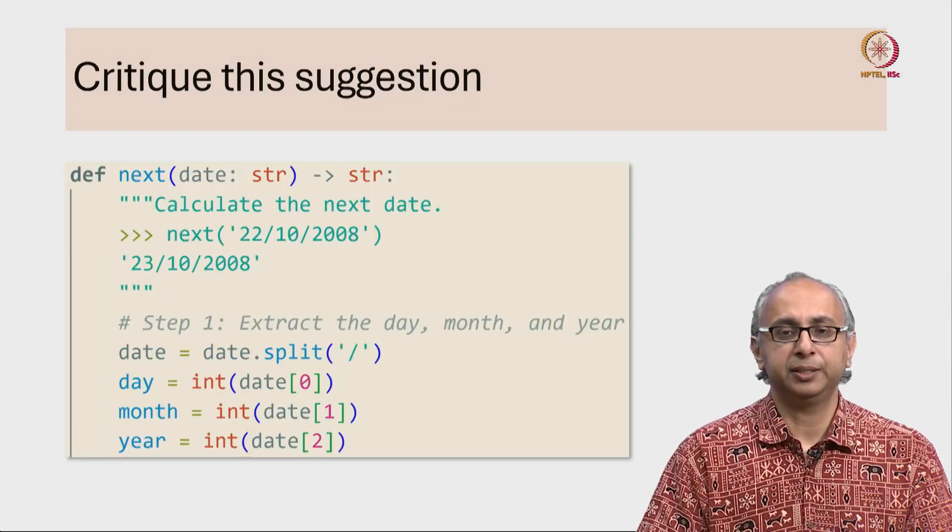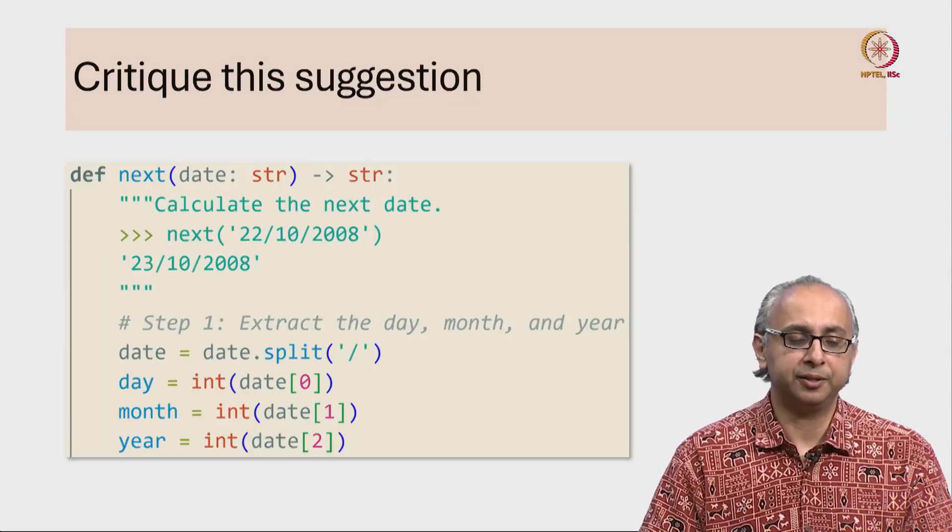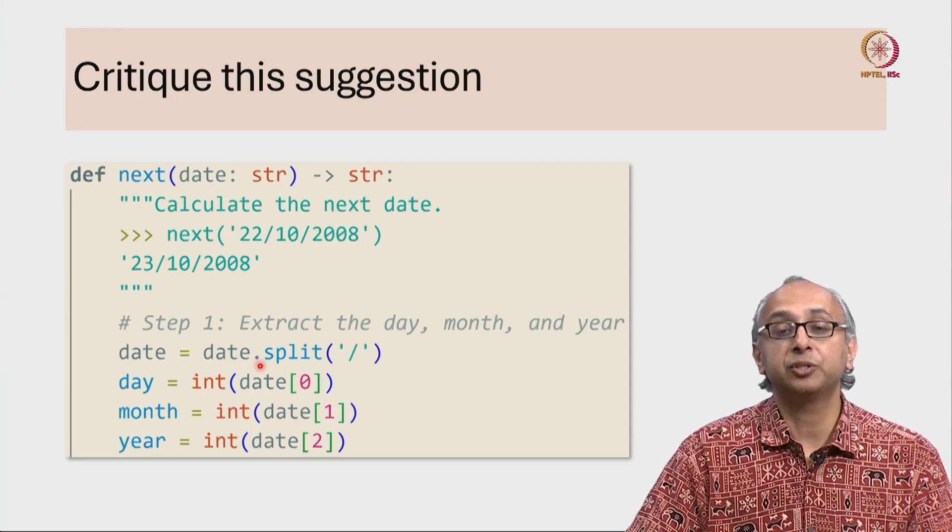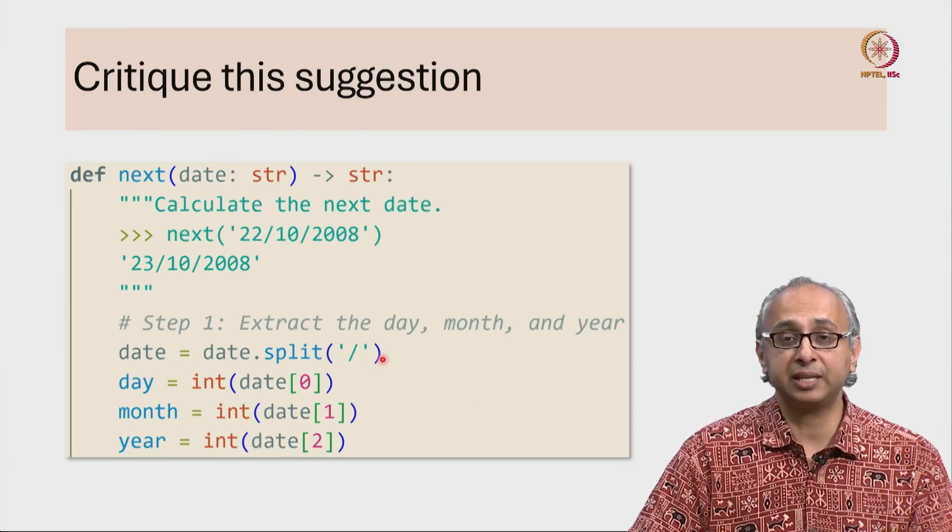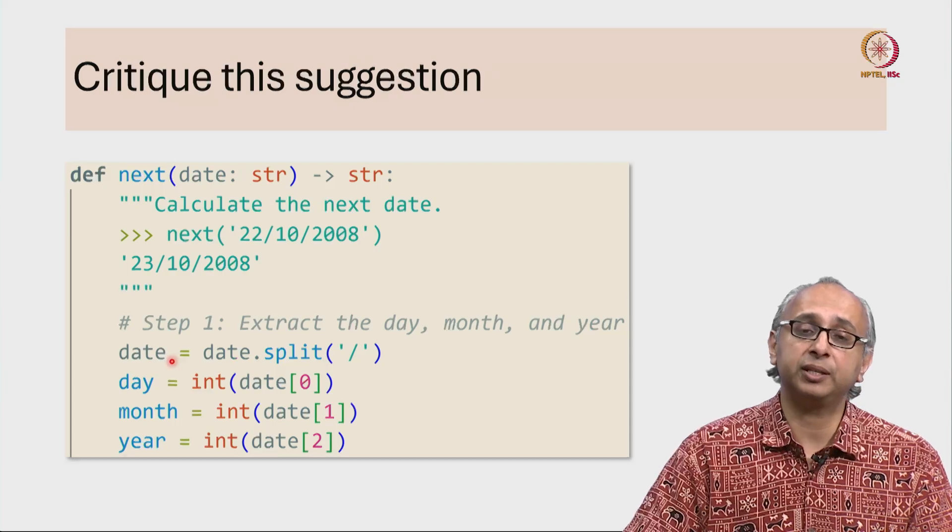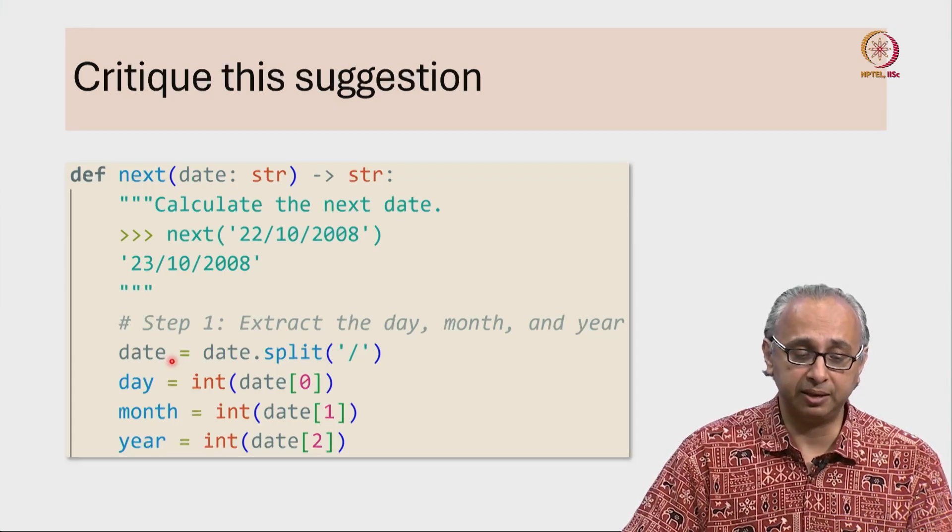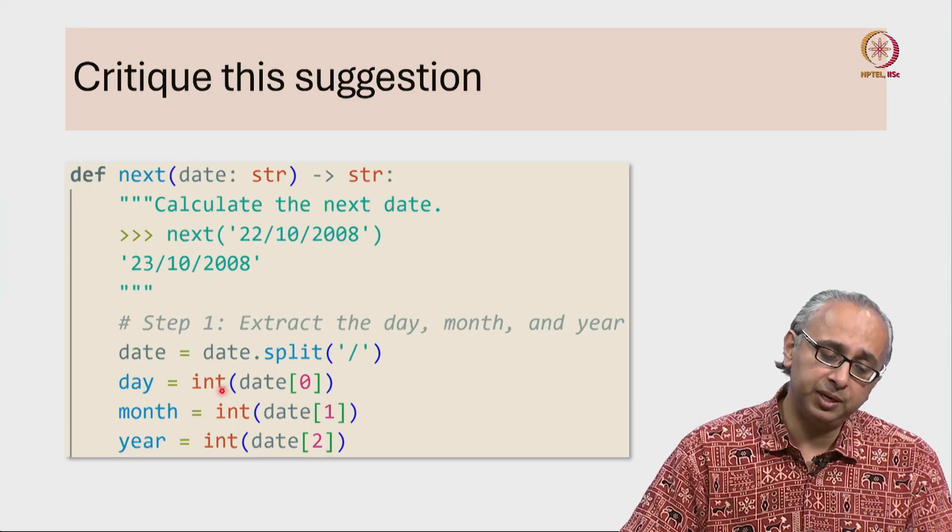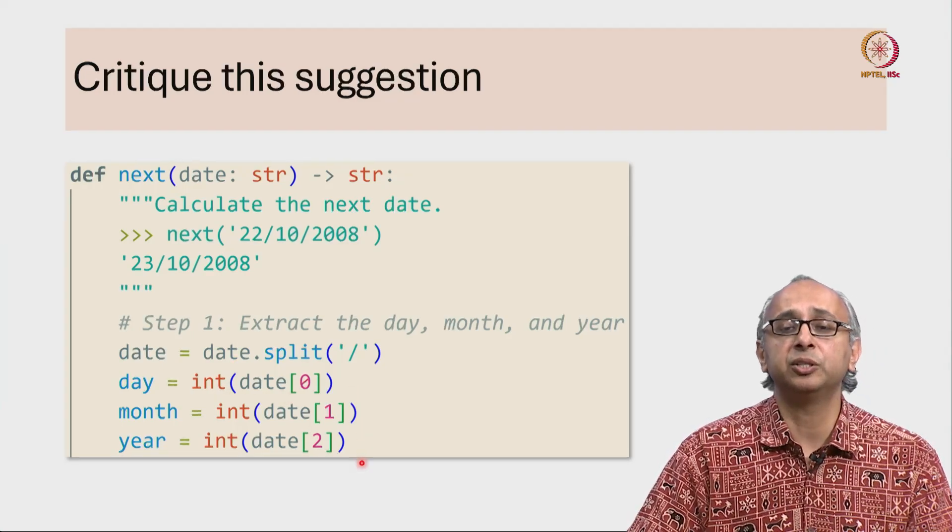Using what we've learned, let's take a look at this code. For step 1, we first take the date string, split it by slash, and capture that object with the variable date itself. Then we take date[0] and convert that to an int, similarly date[1] and date[2].